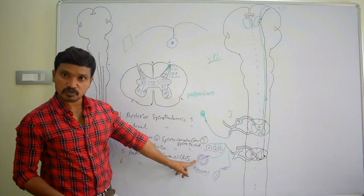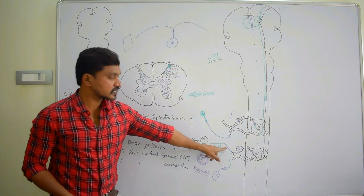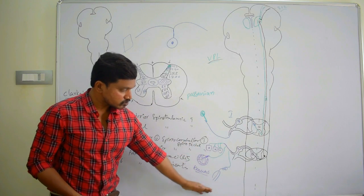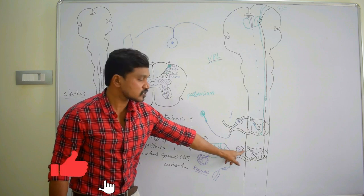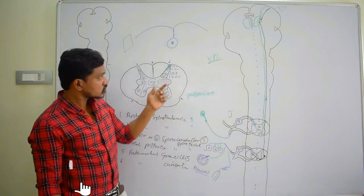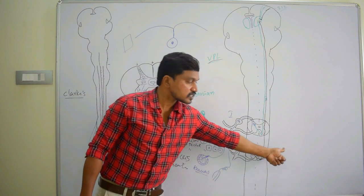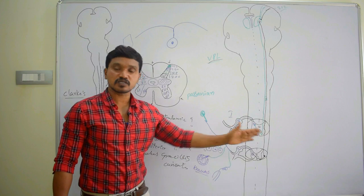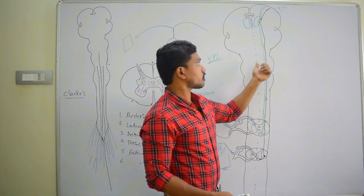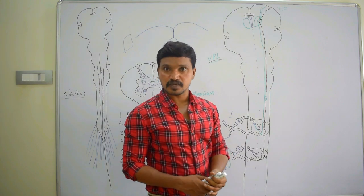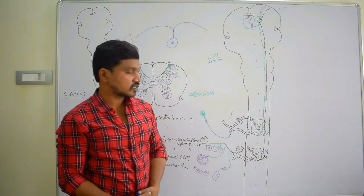The receptors are changed: if Krause's corpuscles are stimulated, cold sensation is carried; if Ruffini's end organs are stimulated, warmth sensation is carried; if free nerve endings are stimulated, pain impulses are carried. These sensations travel through the peripheral process of the dorsal root ganglion to the cell body, then via the central process to the posterior horn cells — the substantia gelatinosa and marginal nucleus. Second order neurons cross the midline to the lateral white funiculus, ascend through the spinal cord and brainstem, pass through the internal capsule, and reach the thalamus. From the thalamus, third order neurons reach area 3-1-2, the somesthetic sensory area.